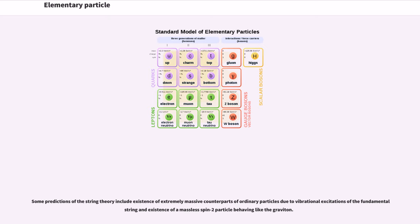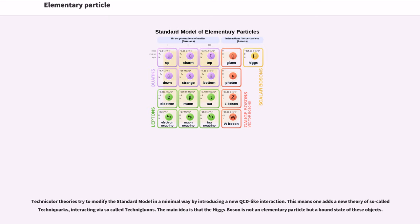Some predictions of string theory include existence of extremely massive counterparts of ordinary particles due to vibrational excitations of the fundamental string and existence of a massless spin-2 particle behaving like the graviton. Technicolor theories try to modify the standard model in a minimal way by introducing a new QCD-like interaction. This means one adds a new theory of so-called techniquarks, interacting via so-called technigluons. The main idea is that the Higgs boson is not an elementary particle but a bound state of these objects.